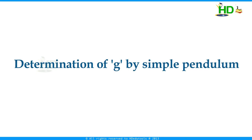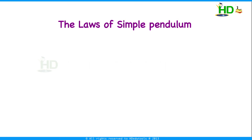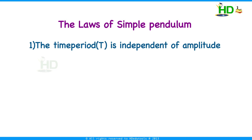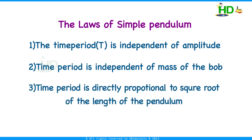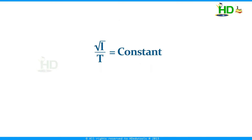Now we discuss the determination of acceleration due to gravity using a simple pendulum. The laws of simple pendulum are: the time period is independent of amplitude, the time period is independent of the mass of the bob, and the time period is directly proportional to the square root of the length of the pendulum — T ∝ √L. This means √(L)/T is constant at a given place, or equivalently L/T² is constant. Applying these laws, we can determine the acceleration due to gravity at a given place.